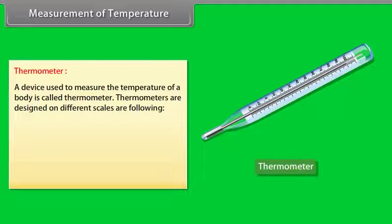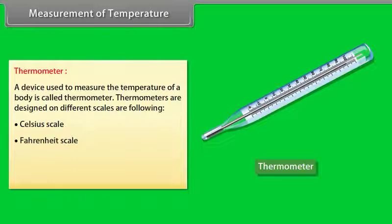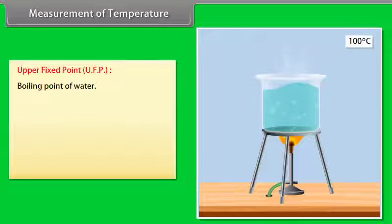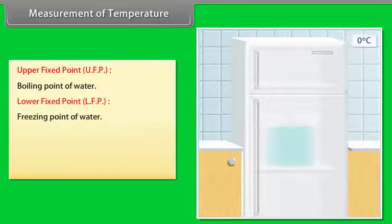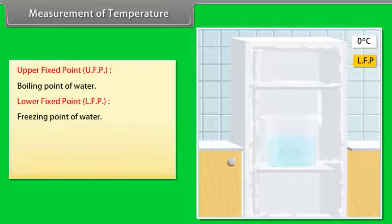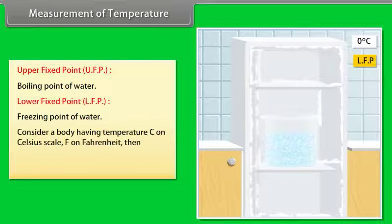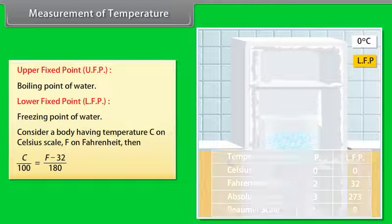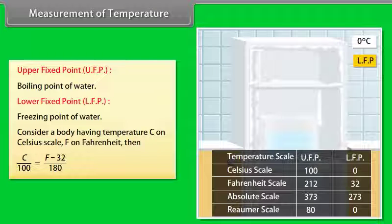Measurement of temperature: A device used to measure the temperature of a body is called a thermometer. Thermometers are designed on different scales: Celsius scale, Fahrenheit scale, Kelvin scale, and Rommel scale. The boiling point of water is known as the upper fixed point, and the freezing point of water is the lower fixed point. If a body has temperature C on Celsius scale and F on Fahrenheit scale, then C/100 = (F − 32)/180.